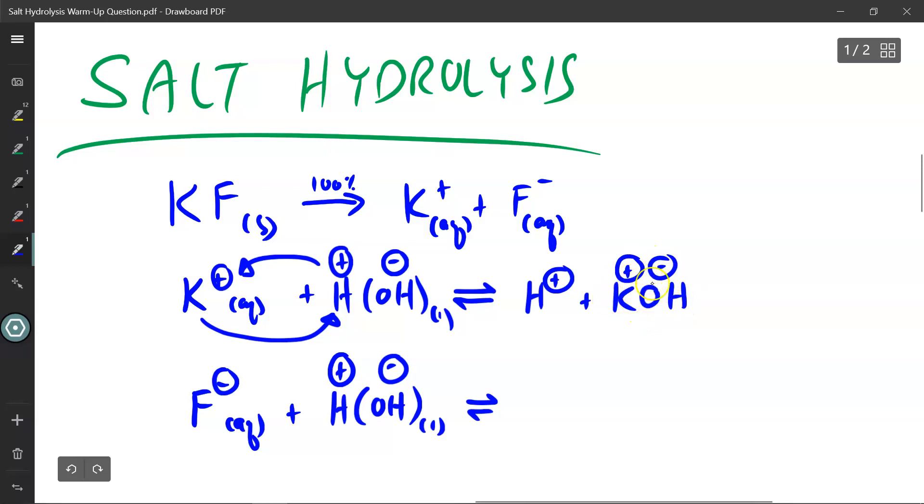And by definition, strong bases will completely dissociate and completely break up. So if KOH completely breaks up, this can't exist. Therefore, this reaction does not occur. And potassium is considered to be a spectator ion because it doesn't actually participate in the reaction.